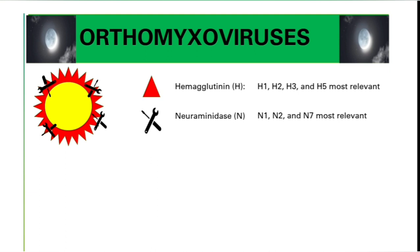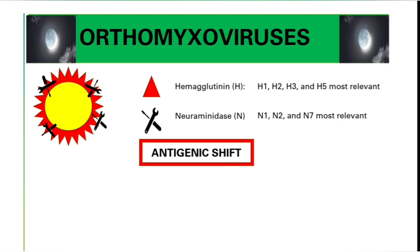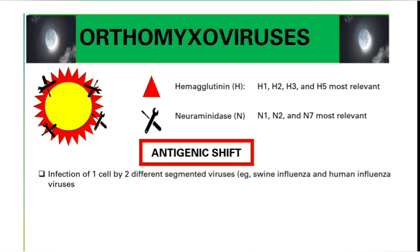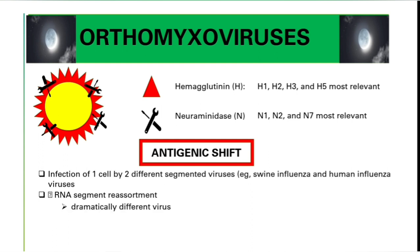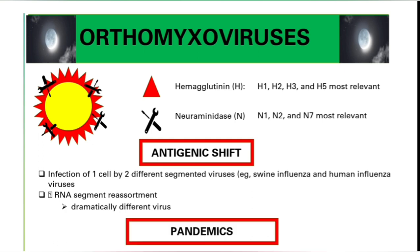This leads us to antigenic variation. There is antigenic shift and antigenic drift. Antigenic shift happens when one cell is infected by two different segmented viruses — for example, swine influenza and human influenza. These two co-infecting one cell will result in RNA segment reassortment. After this reassortment, a new strain emerges that is completely different from the previous ones. This kind of mutation is responsible for pandemics.